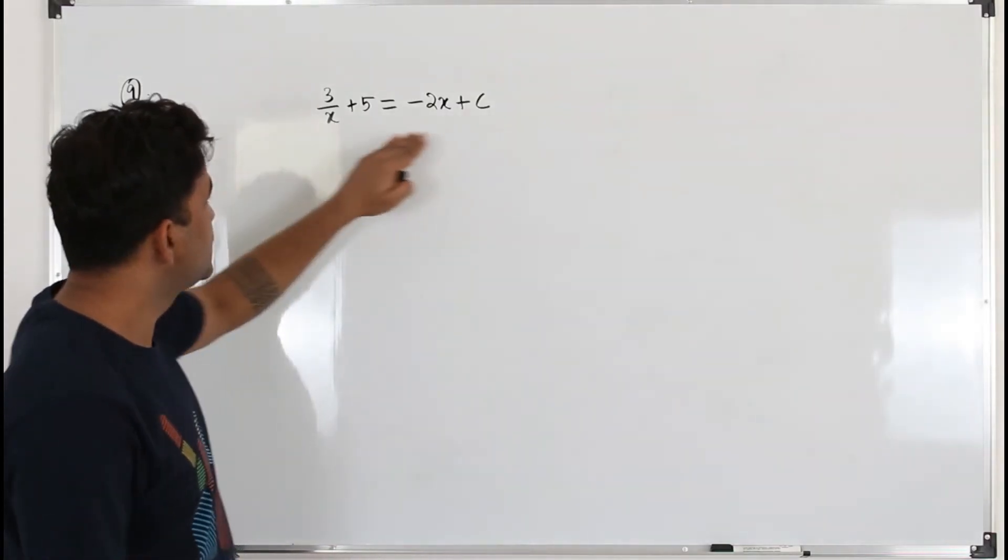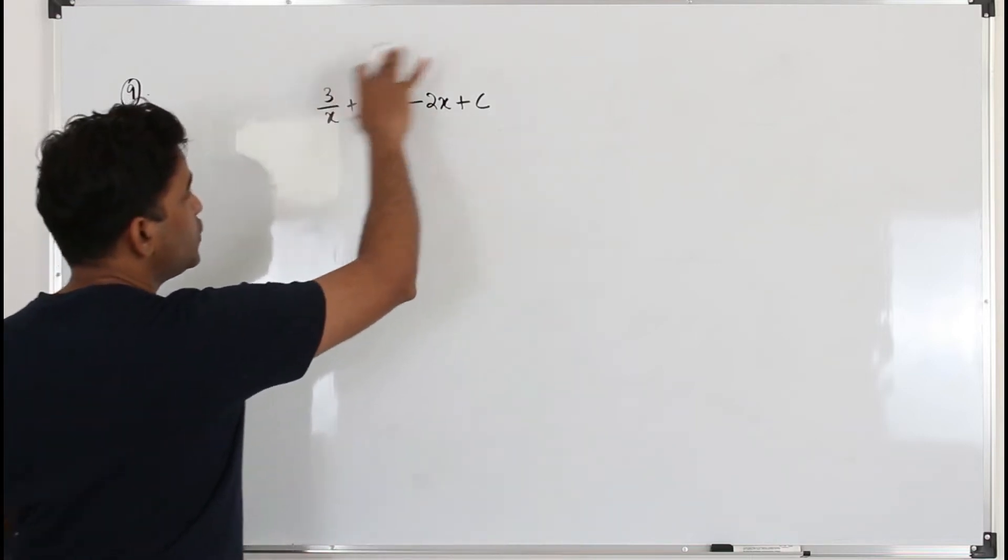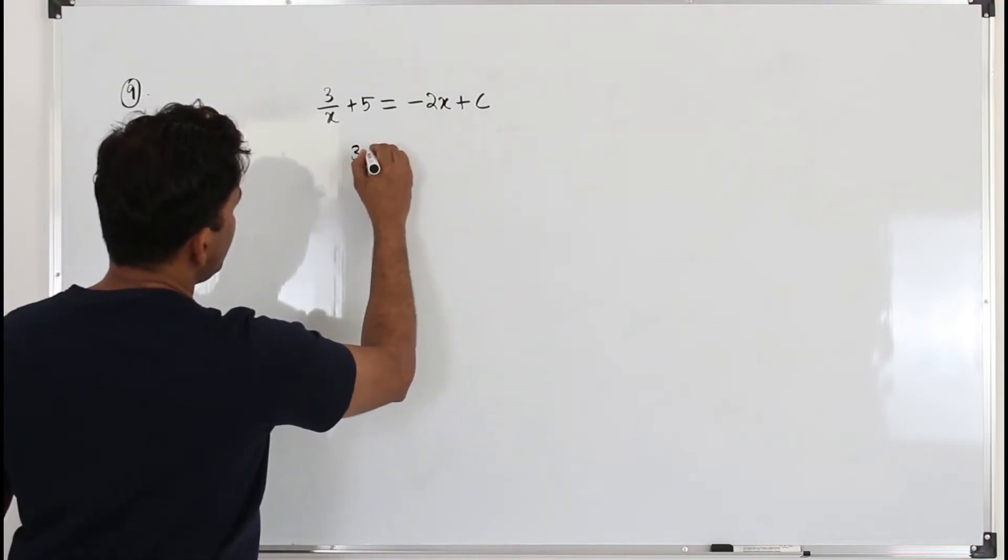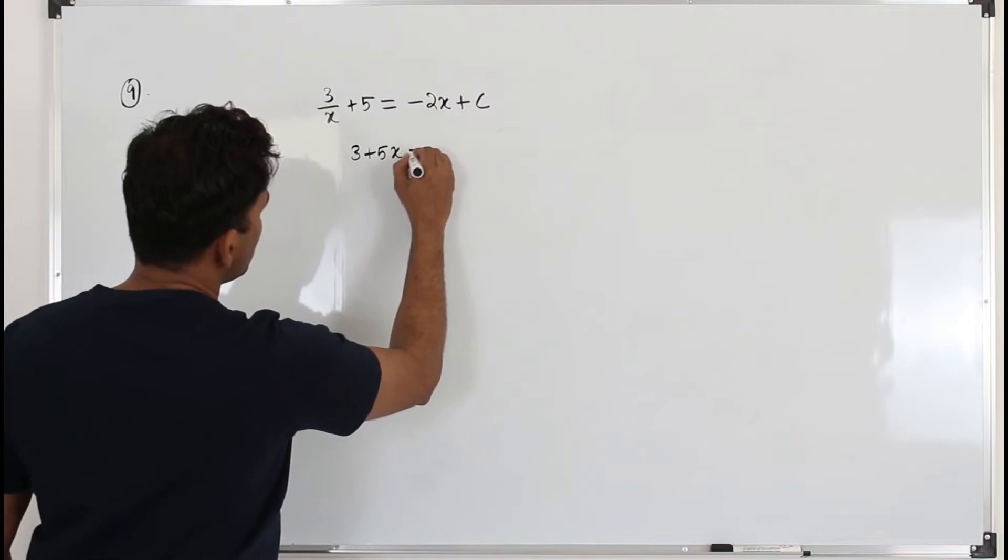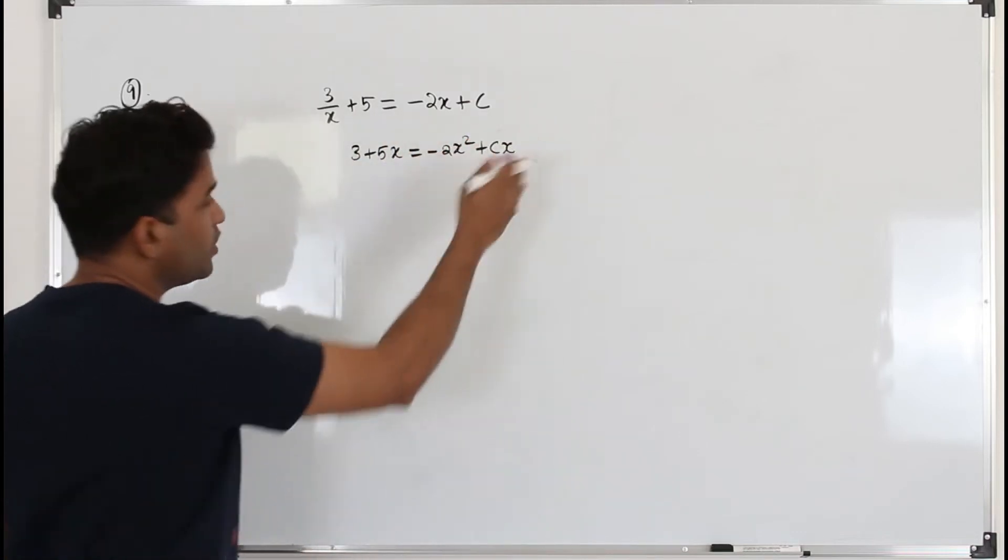The question says this equation has no real roots. So first you need to frame a quadratic equation. Multiply everything by x. So you get 3 + 5x = -2x² + cx.